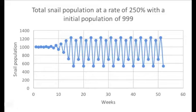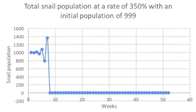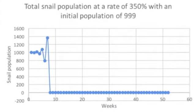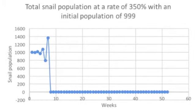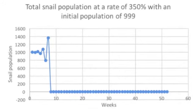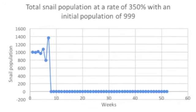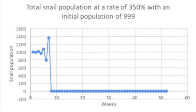When the rate of growth is 250% with the initial population of 999, the carrying capacity is reached rather quickly but begins to fluctuate approximately between 500 and 1,250 as the weeks progress. When the rate of growth is at 350% with the initial population of 999, the population drops to zero right around the seven year mark. So the population was stabilized when we had an initial population of 999 and a growth rate of 150%.